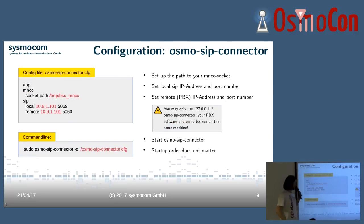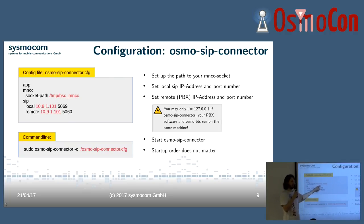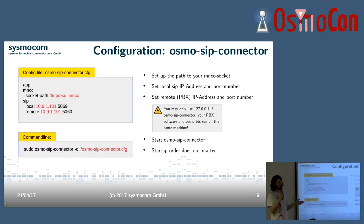Here's a config file snippet for the osmo-sip-connector itself. There's not much to configure — you just set up the path to the Unix domain socket. By picking different paths there, you could also have different instances running in parallel.